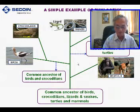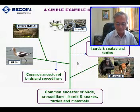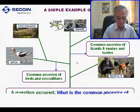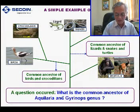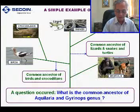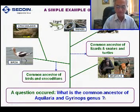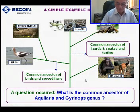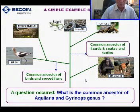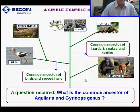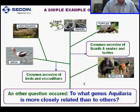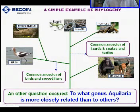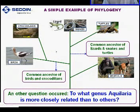For example, the first question is: what is the common ancestor of Aquilaria and Gyrinops, like this one and this one? And the second question is: to which genus is Aquilaria more closely related than to others?